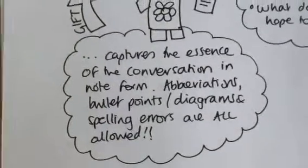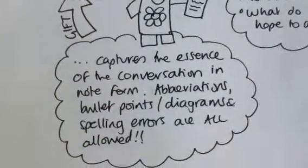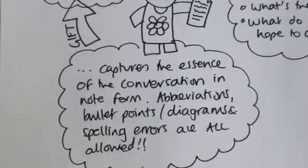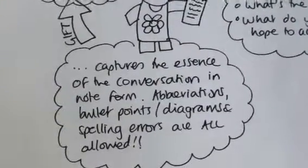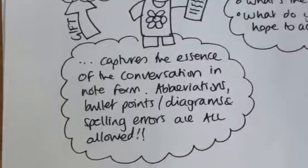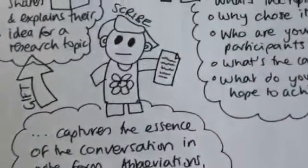You've got this third wheel, if you like, who captures the essence of the conversation in note form. And they can abbreviate, they can bullet point, they can draw diagrams and pictures, they can make spelling mistakes—they're all allowed.